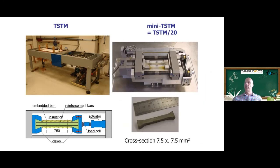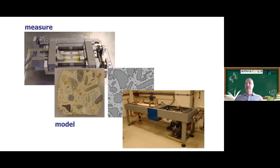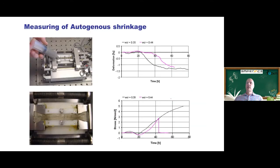We have the big TSTM machine and can do the same test on a smaller scale — putting only cement paste or mortar with a little sand in a small frame. The same test at different scales gives different fracture mechanisms. The small version is very environmentally friendly with minimal waste. You can cast the sample with a syringe, put the cement paste in, let it shrink, and get a small crack in the specimen where you could also study self-healing.